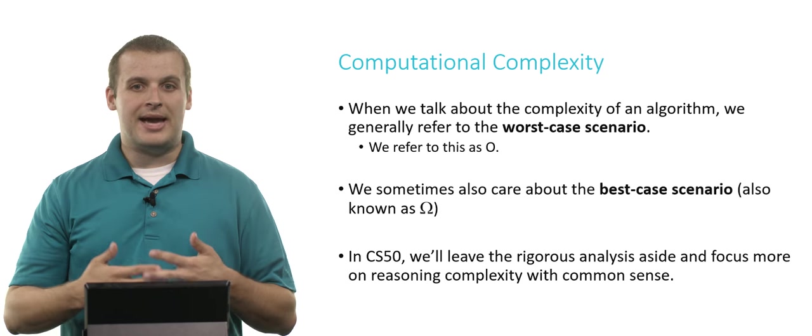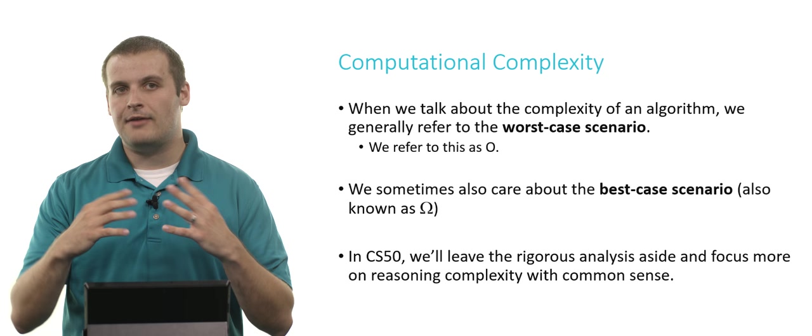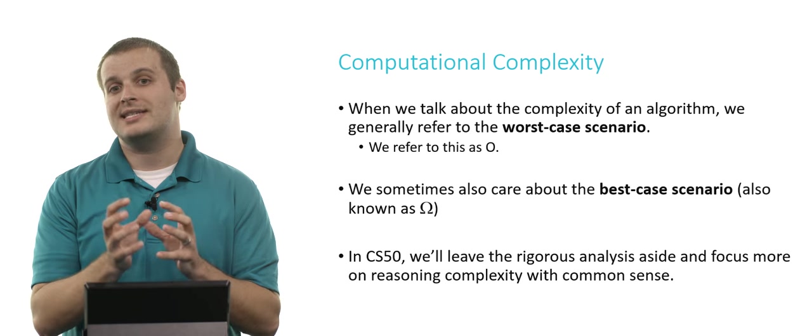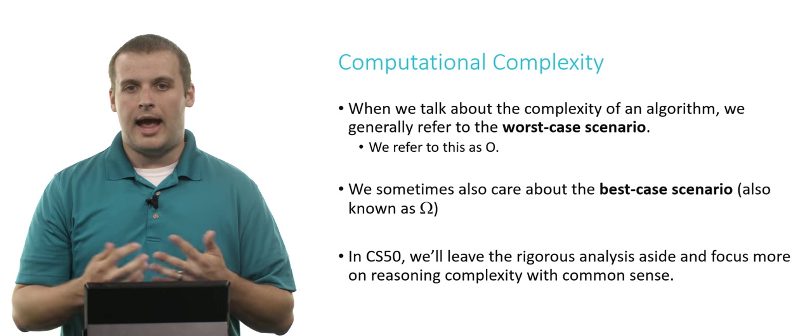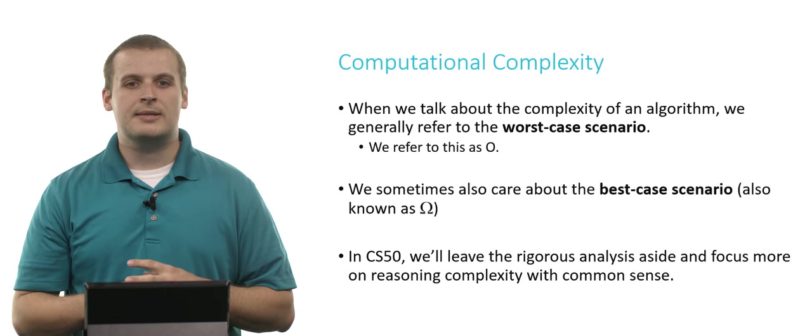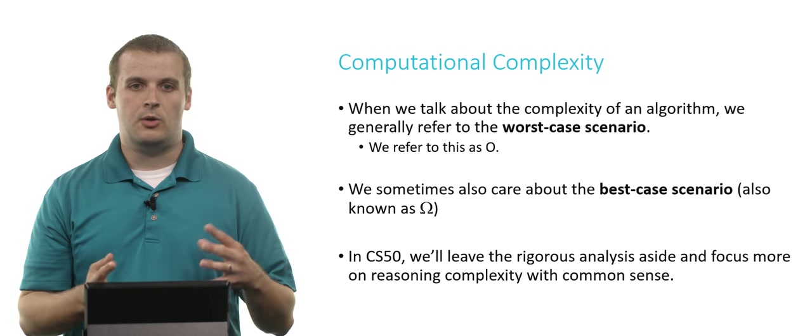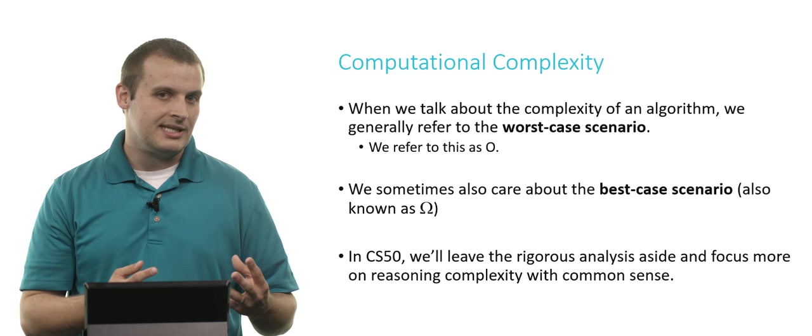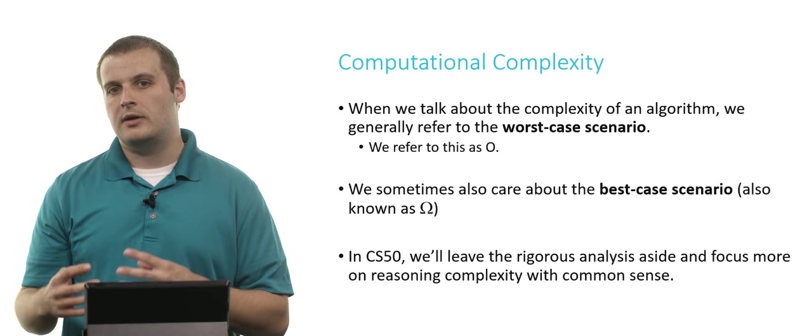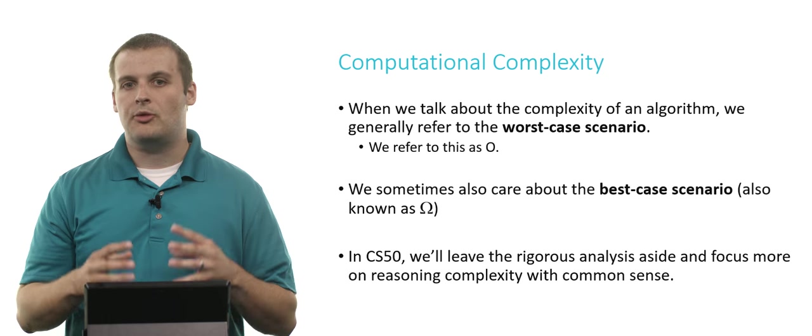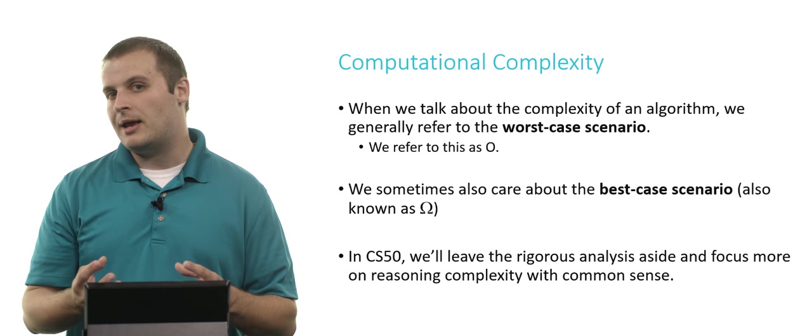Sometimes, though, we do care about the best case scenario. If the data is everything we wanted it to be, and it was absolutely perfect, and we were sending this perfect set of data through our algorithm, how would it handle in that situation? We sometimes refer to that as big omega. So in contrast with big O, we have big omega. Big omega for the best case scenario, big O for the worst case scenario. Generally, when we talk about the complexity of an algorithm, we're talking about the worst case scenario, so keep that in mind.